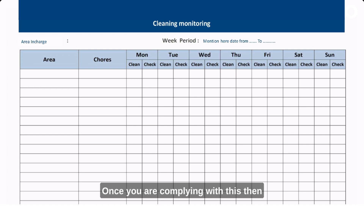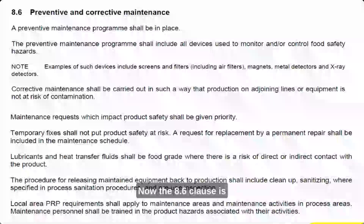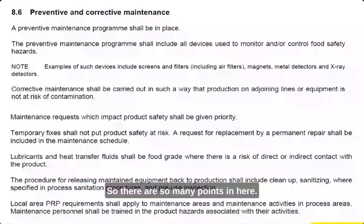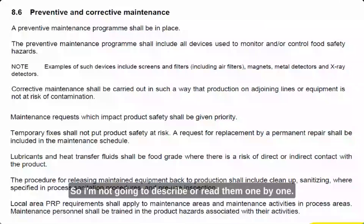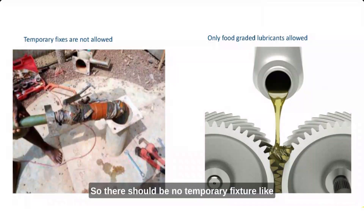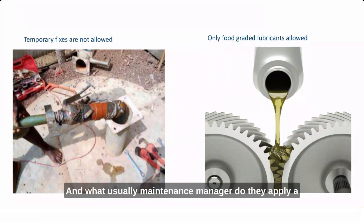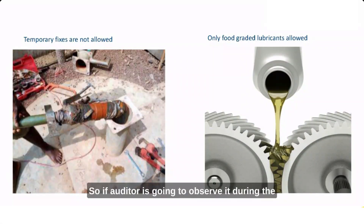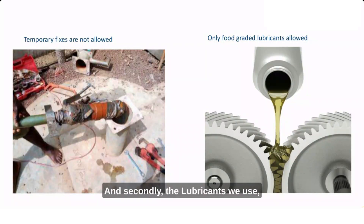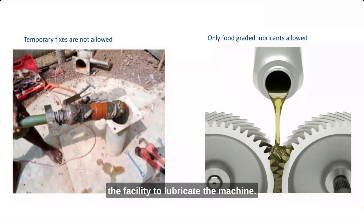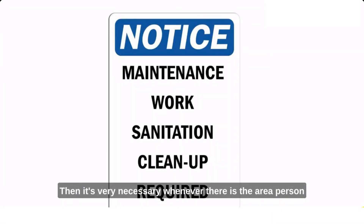Clause 8.6 is Preventive and Corrective Maintenance. There are many points here; I will highlight key examples. There should be no temporary fixtures — for example, if there is a leakage and the maintenance manager applies tape as a temporary fix, an auditor will flag it as a non-compliance. Additionally, lubricants used must be food-grade, and a food-grade certificate must be available.